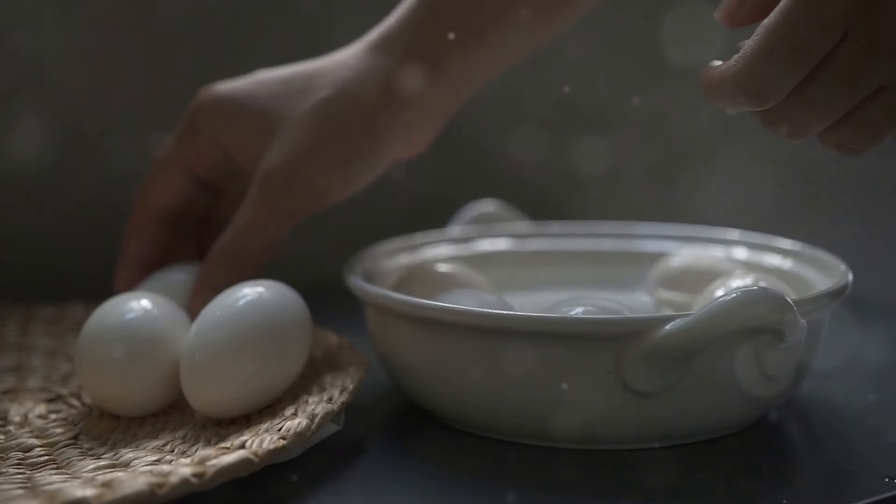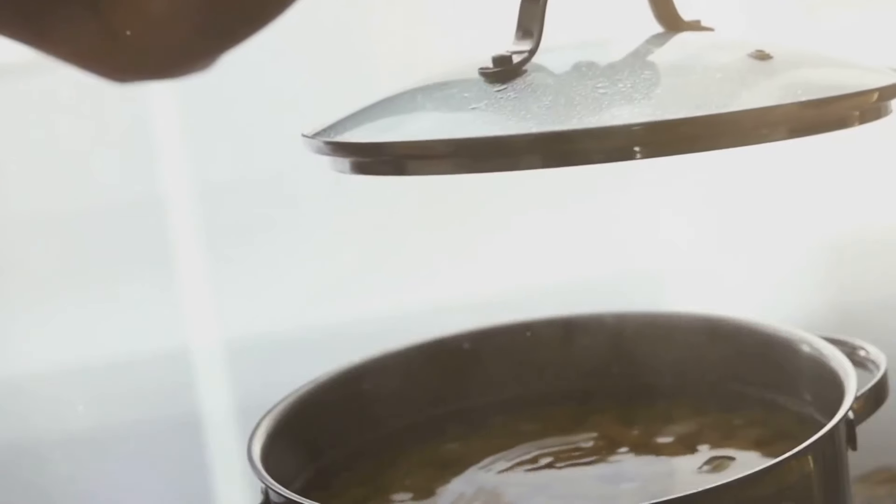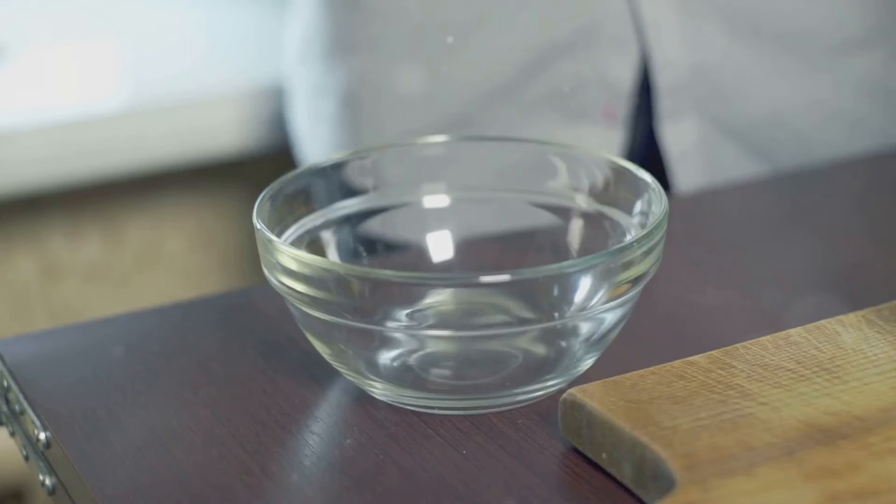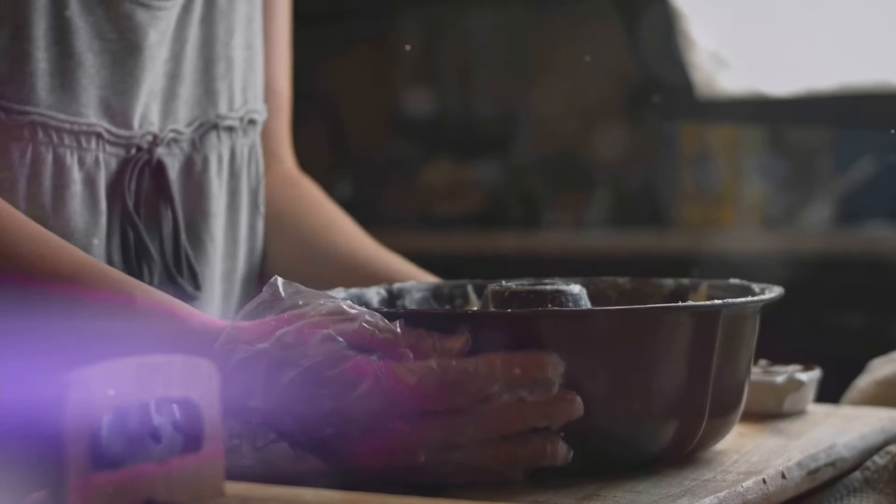Fill a microwave-safe bowl with water and place the eggs in it. Add a pinch of salt to the water. Cover the bowl with a microwave-safe plate. Microwave on high for 5 to 7 minutes for soft-boiled, 8 to 10 minutes for medium, and 11 to 13 minutes for hard-boiled eggs. Be cautious when removing the bowl as it will be hot.